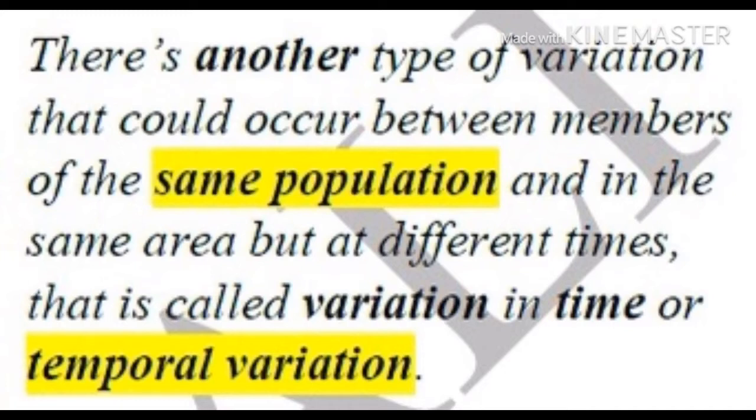Now we have the same population in the same area but at different times. This is the difference here, and this is called variation in time, or temporal variation.